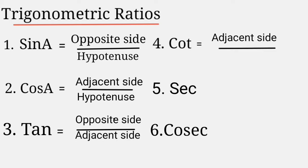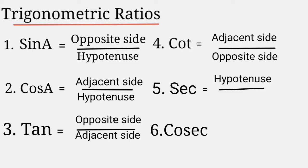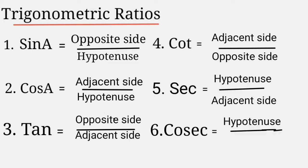Cot theta is equal to adjacent side to theta by opposite side to theta. Secant theta is equal to hypotenuse by adjacent side to theta. Cosecant theta is equal to hypotenuse by opposite side to theta.